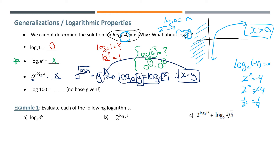The last type of weird one we get sometimes is when we don't have a base — we talked about this in our last lesson. When we don't have a base, that means the base is an invisible 10. So log base 10 of 100 equals d means 10 to the power of d equals 100. I think you can all figure out that will be a 2.